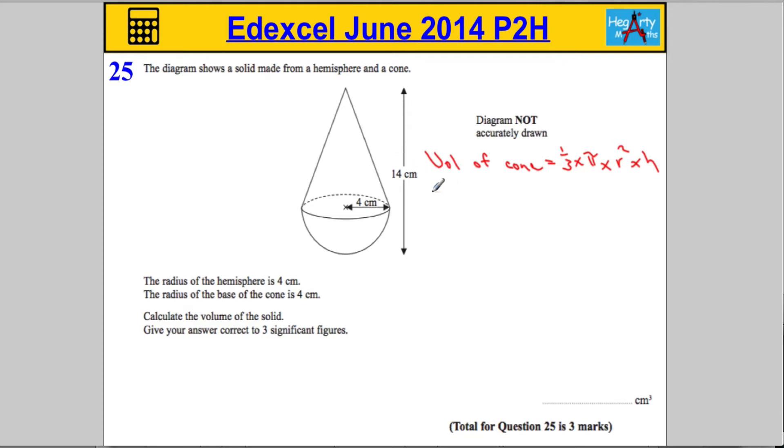And likewise, we know the volume of a sphere. The volume of a sphere is also at the front of the paper, s-p-h-e-r-e, and that is 4 over 3 pi r cubed. Pi times r cubed, should I say.